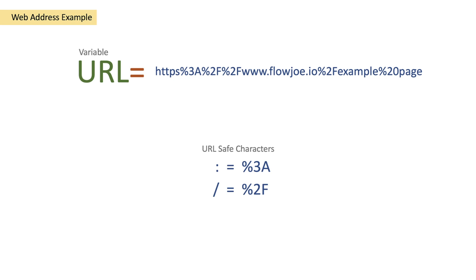So we've got colon forward slash forward slash, then www.flowjo.io forward slash example, then %20. Now %20 is simply a space — you can't have a space in the URL, so it replaces the space with a URL-safe character.